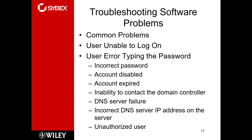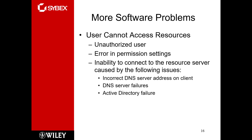Unauthorized user access is a big concern — an unauthorized user is someone not supposed to be accessing the equipment but actually is. When dealing with the server plus infrastructure, infrastructure also deals with the networking portion. When a user cannot access a resource, it can be a network or infrastructure issue rather than a server issue. Unauthorized user access and permission settings are server issues. Inability to connect due to DNS or Active Directory failures could be server, networking, or both.